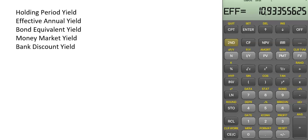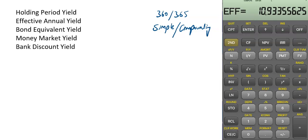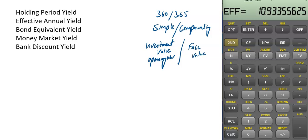These yields all use different conventions. Some use the 360-day convention, some use the 365-day convention. Some yields use the simple interest convention and some use the compounding convention. In some yields we take the base as investment value or the opening market value, and in some yields we take the base as face value or the ending value.